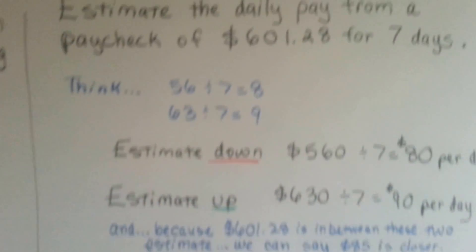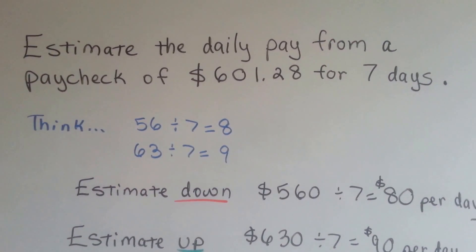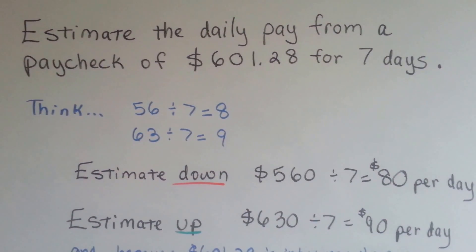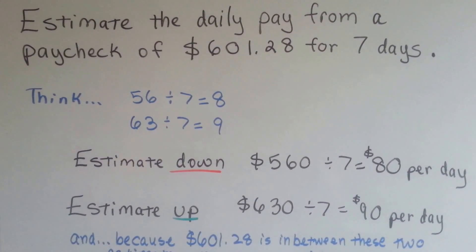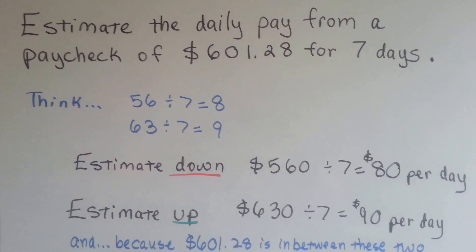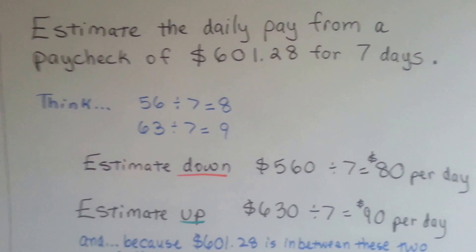If you want to estimate the daily pay from a paycheck of $601.28 for 7 days, you have to think. What is easily multiplied by 7? What is going to make 7 an easy divisor?